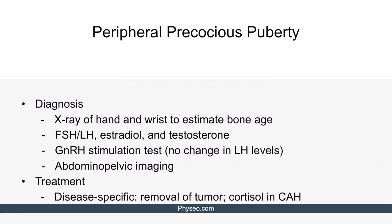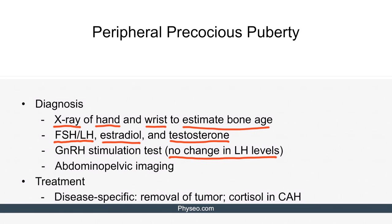The diagnosis of peripheral precocious puberty is very similar to that of central precocious puberty. First, we perform an x-ray of the hand and wrist to estimate bone age. If the bone age is greater than the chronological age by more than one year, we then check the FSH, LH, estradiol, and testosterone levels. If LH is low or normal, we perform a GnRH stim test. If the patient has peripheral precocious puberty, there is usually no change in LH levels due to the negative feedback of peripheral sex hormones on LH. Abdominal pelvic imaging is warranted if a sex hormone-producing mass is suspected.